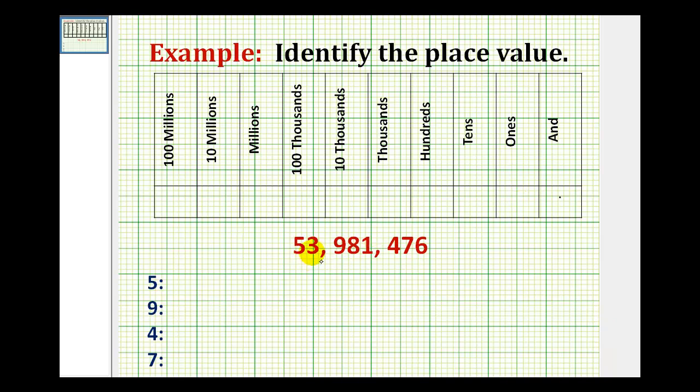In this problem we're given the number 53,981,476. We want to identify the place value of each of these given digits. Notice how I provided the place value chart for whole numbers as reference.